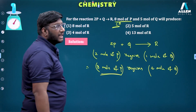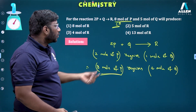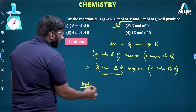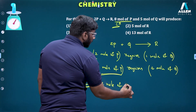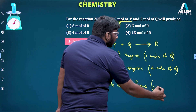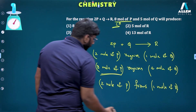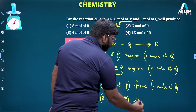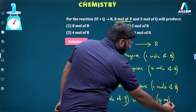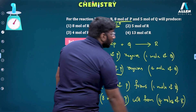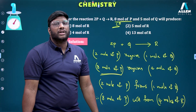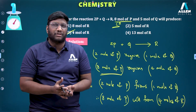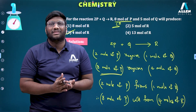With P as the limiting reagent, we find the quantity of product formed. From the balanced equation, 2 mol of P when completely reacted forms 1 mol of R. Therefore, 8 mol of P will form 4 mol of R. We identified the limiting reagent and found the quantity of product formed with respect to it — 4 mol of R is the answer. This is the concept of limiting reagent. I hope all of you understand it clearly. Thank you, bye.